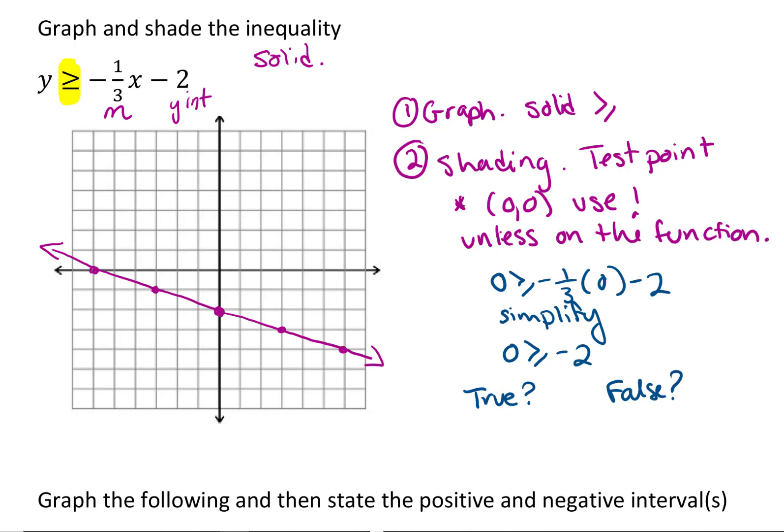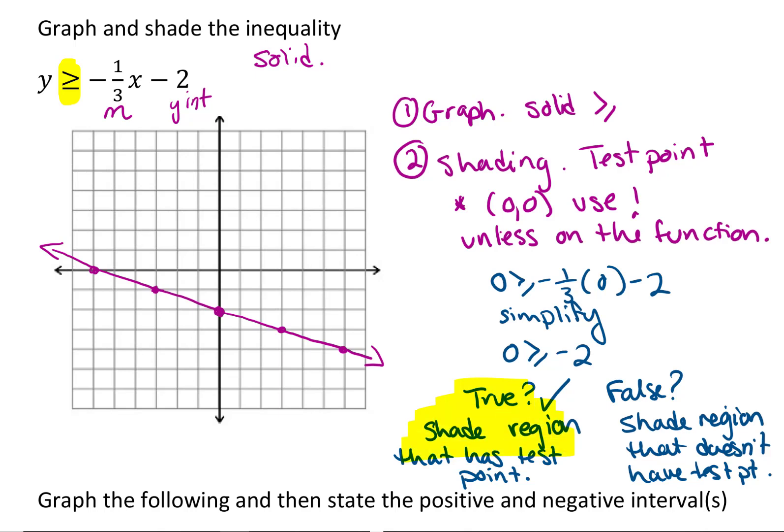Zero is greater than or equal to the number negative two. That is true. So if the statement is true, you're going to shade the region that holds the coordinate that was your test point. So my answer is true. So I'm going to shade the region that has the test point, which in this case is above.